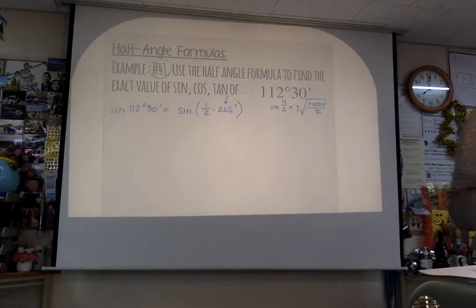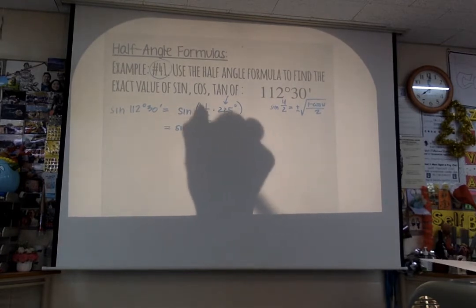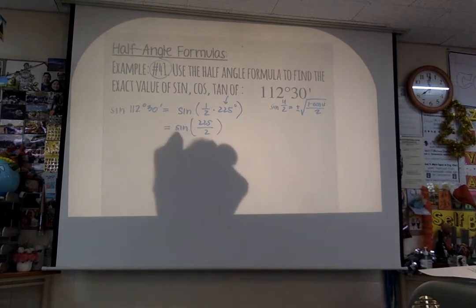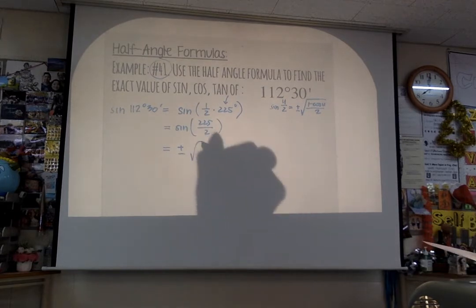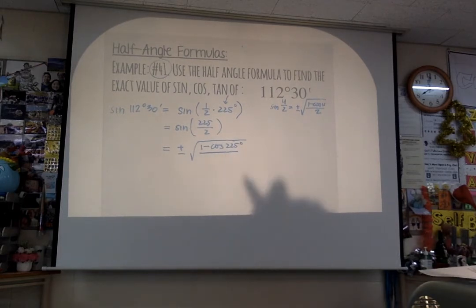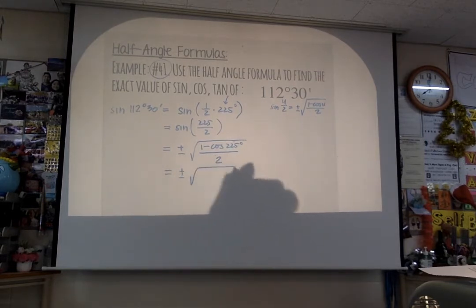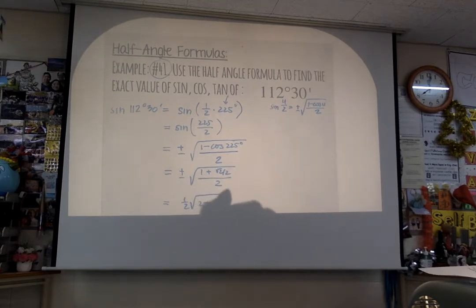You have that half-angle formula and you're going to apply it here. Your u is 225. So rewrite it as sine of 225 divided by 2. Then apply the formula: plus or minus square root of 1 minus cosine of 225, all over 2. Cosine of 225 is negative root 2 over 2, so when you simplify, you get one-half times the square root of 2 plus root 2.